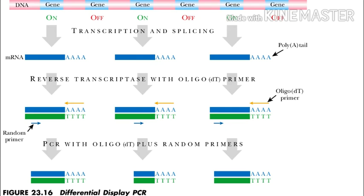If the growth conditions are then altered, the pattern of DNA bands will change. In many cases multiple bands will appear and multiple bands will disappear, thus allowing multiple random genes to be analyzed rather than just a single gene of interest as in RT-PCR.